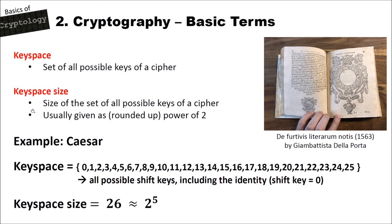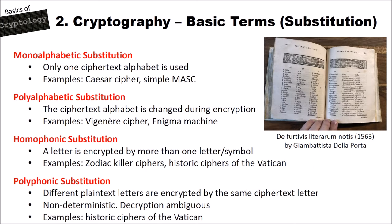The key space size is the size of the set of all possible keys of a cipher. Cryptanalysts or cryptographers usually give these as a rounded-up power of 2. In the case of the Caesar cipher, the key space size is 26, because we have 26 numbers, which is about 2 to the power of 5. With substitution ciphers we also have additional basic terms. Monoalphabetic substitution ciphers only have one ciphertext alphabet — examples are the Caesar cipher or the simple monoalphabetic substitution cipher. Polyalphabetic substitution ciphers change the alphabet during encryption — examples include the Vigenère cipher and the Enigma machine.